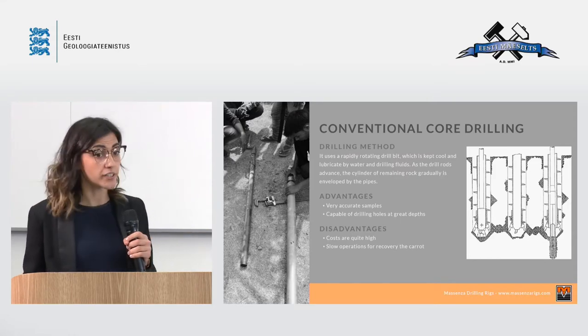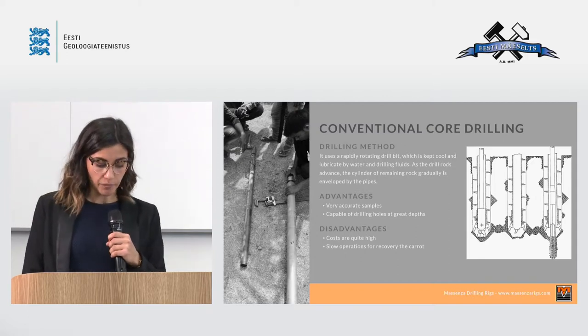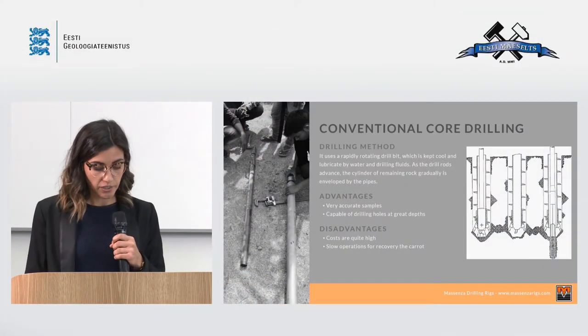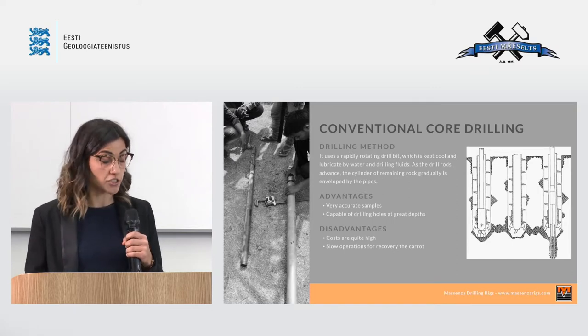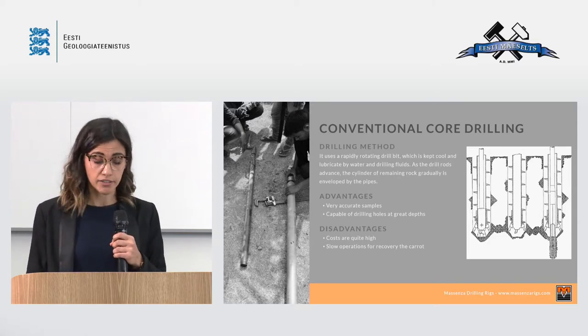Then we have conventional core drilling, which is probably the more common and more well-known. It uses a rapidly rotating drill bit and water and drilling fluid to cool down and lubricate the drill bit. As the drill rods advance, the cylinder of rock — the remaining core of the soil — is gradually enveloped inside the drill pipe. With core drilling in general, weight on the bit and rate of penetration need to be constant to ensure that the core is not washed away. For example, in hard rock formation, not enough weight risks polishing the bit, while too much weight can cause the bit to burn.